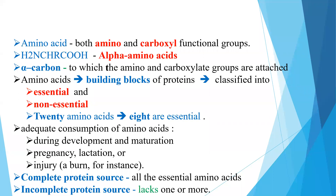The second classification is based on side chains, that is the organic substituent, which we will discuss in detail. The next basis of classification is nutritional classification — depending on the nutritional value of amino acids, they are divided into two groups: essential and non-essential amino acids.